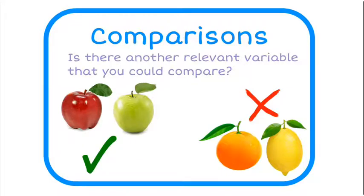The key thing we first need to identify is whether there's another relevant variable in the data set that can be compared. So apples and apples — green apples, red apples — I can compare them because they're both talking about the same thing. Where I'm talking about lemons and oranges, they're different things, and so if I don't have data that's comparable or relevant and connected, then don't bother.